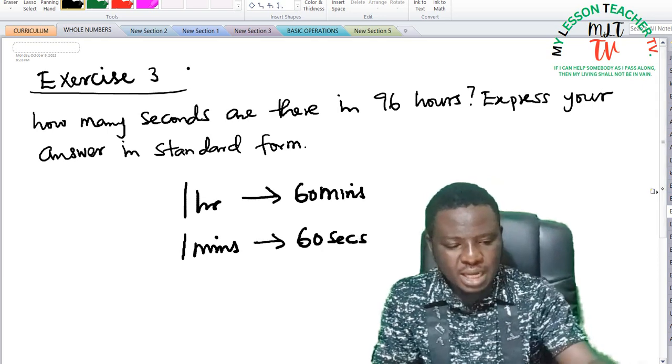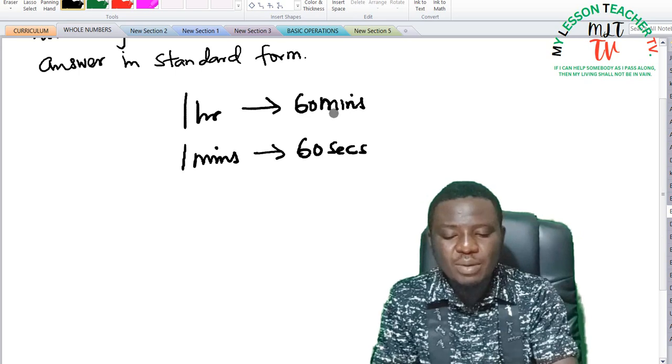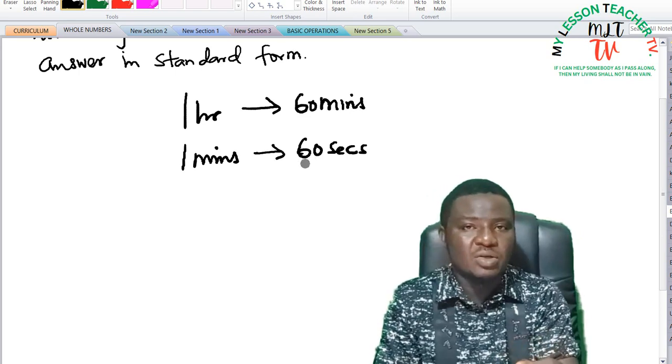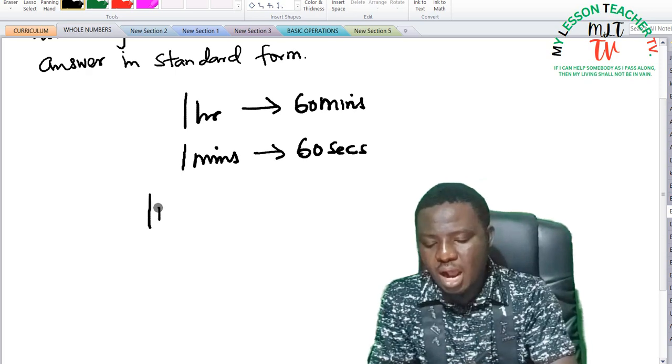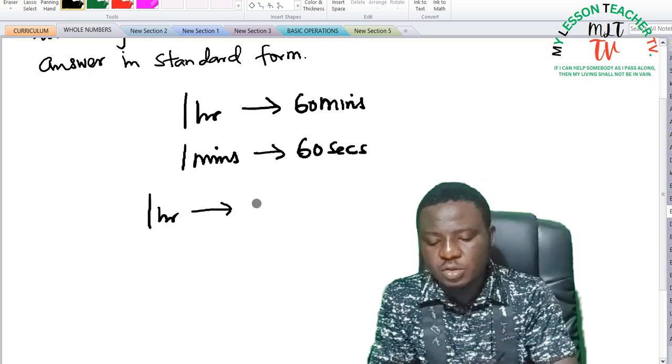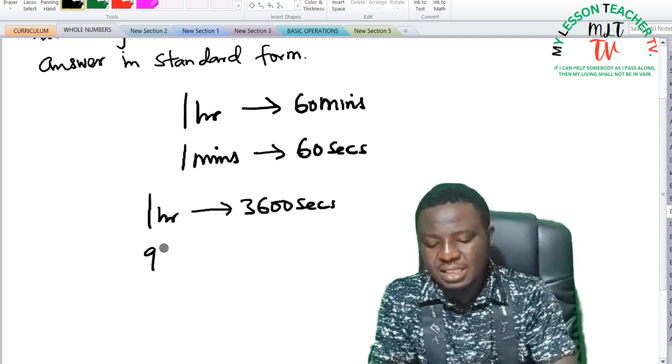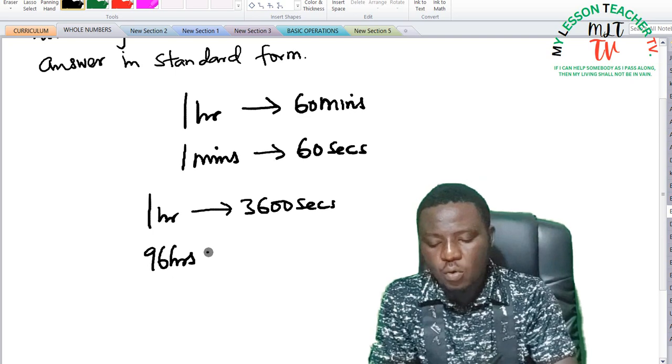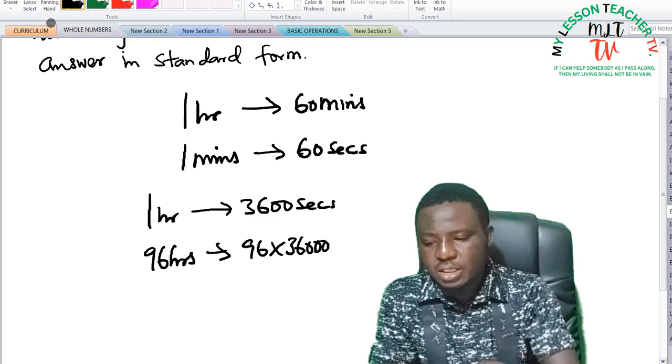If one hour is equivalent to 60 minutes and one minute gives us 60 seconds, it therefore means that one hour is equivalent to 60 times 60, which is 3,600 seconds. So if one hour is equivalent to 3,600 seconds, it therefore means that 96 hours will be equivalent to 96 times 3,600 seconds.